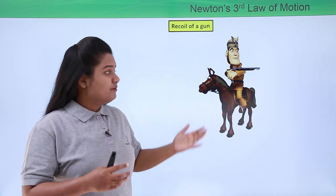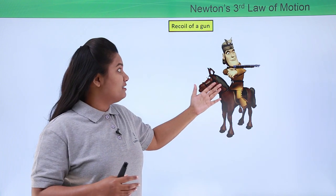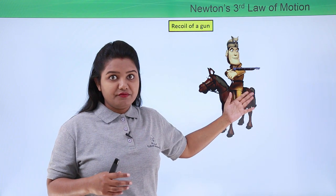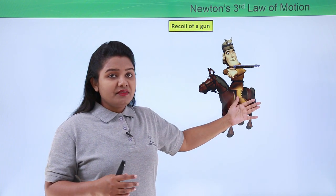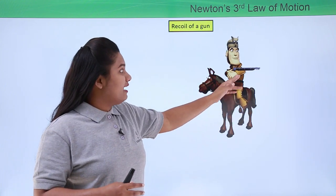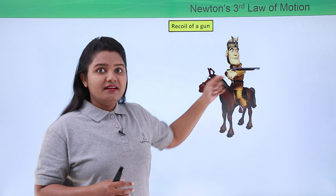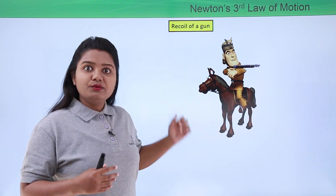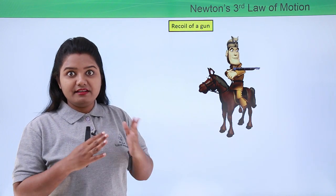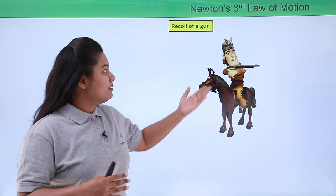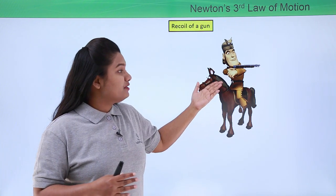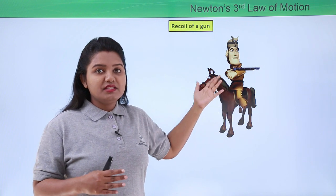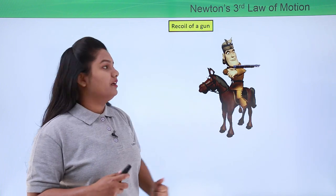When a gun fires a bullet, the bullet moves out of the gun with a very large velocity or very large speed. But we also see that the gun moves backward on firing a bullet. This backward movement of the gun when a bullet is being fired is what we call the recoil of a gun.